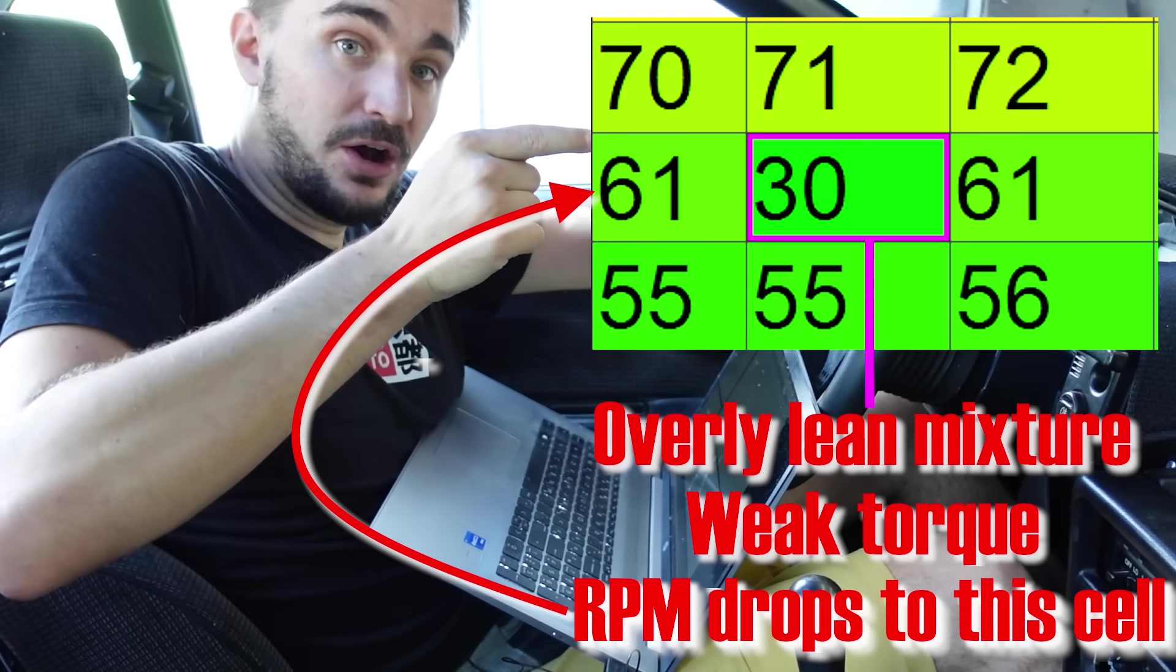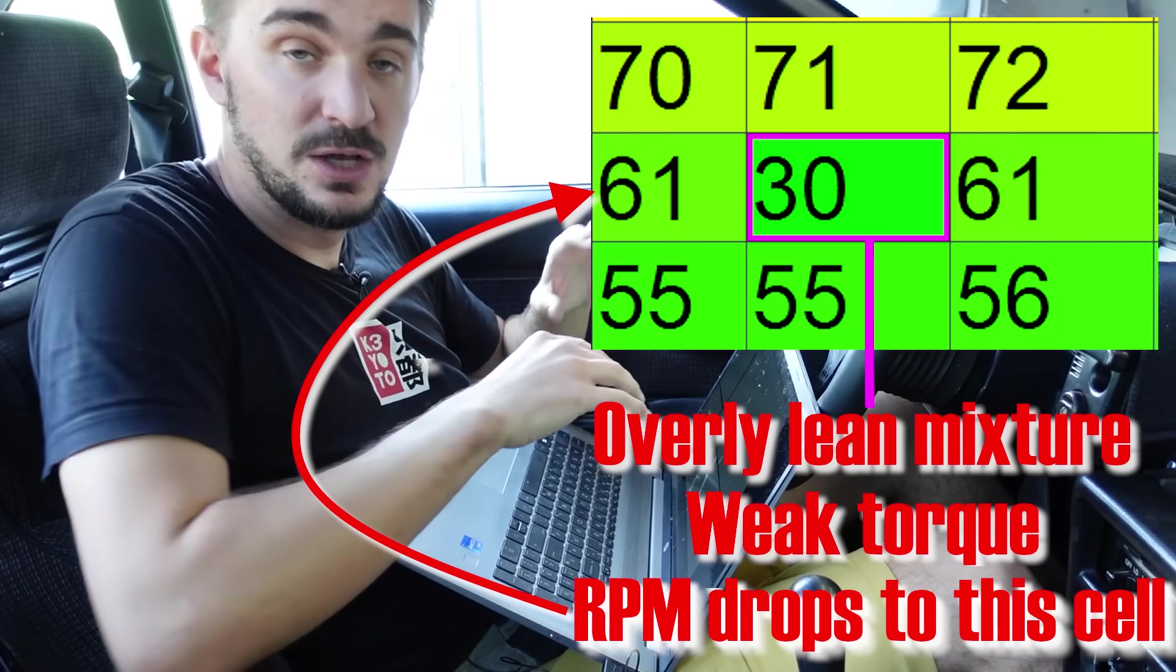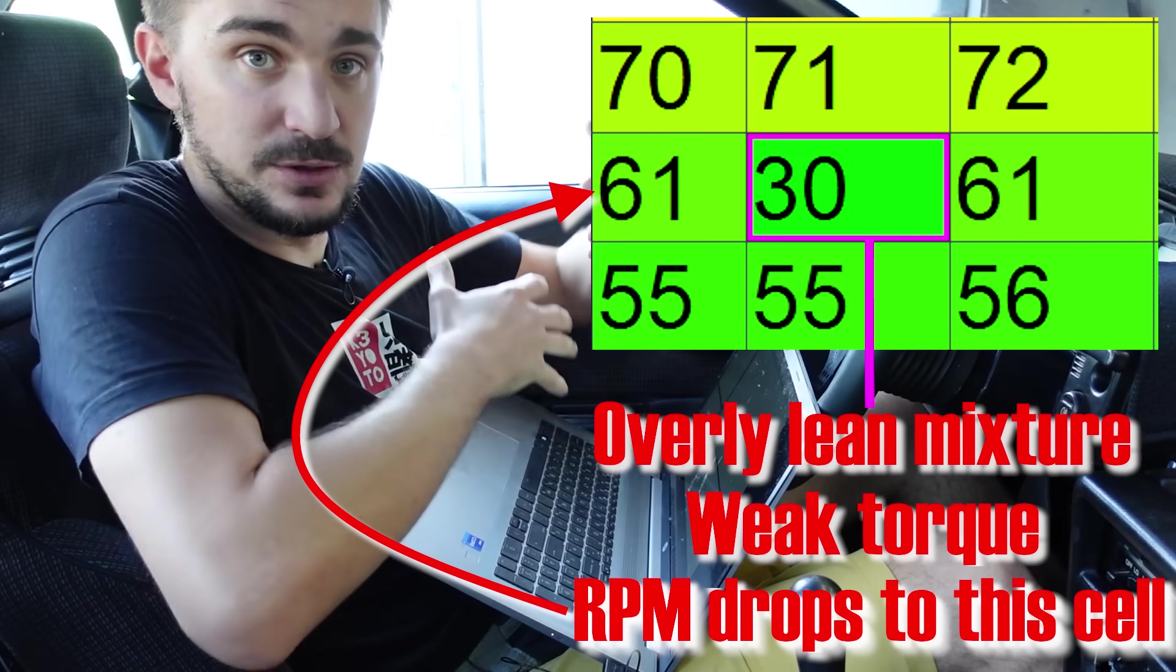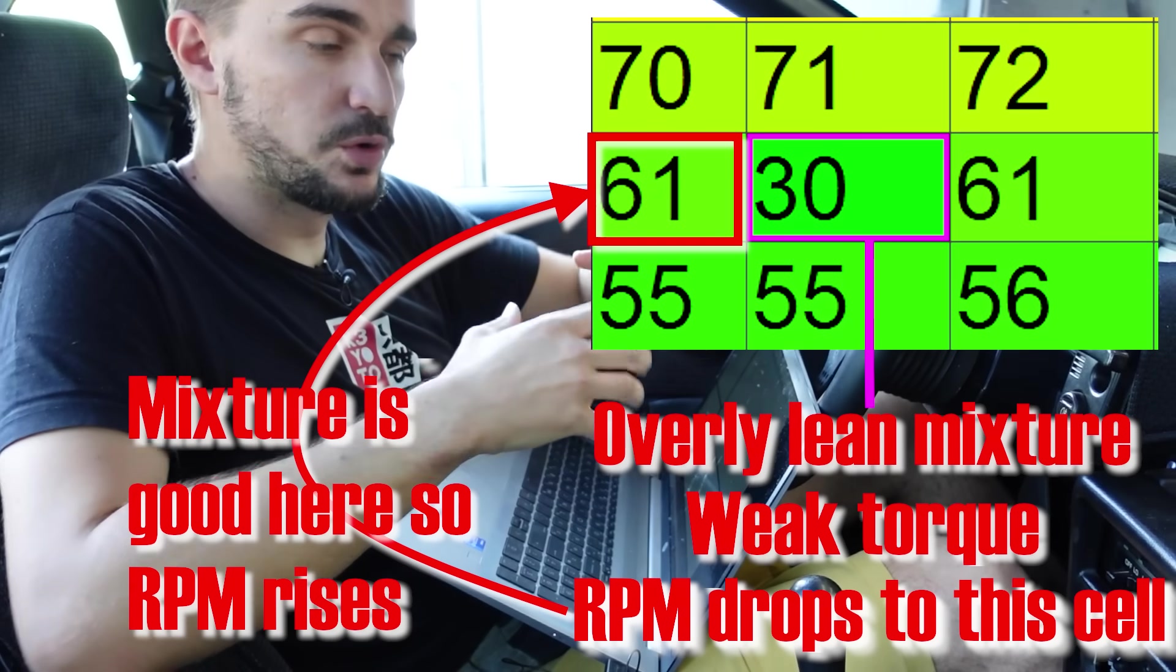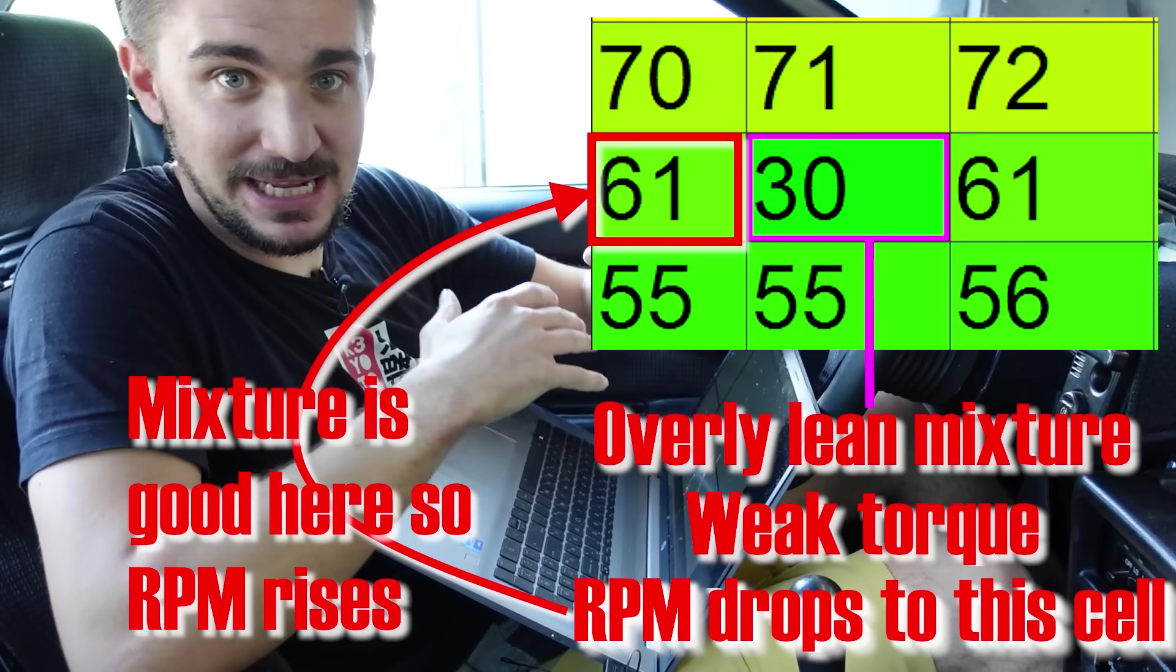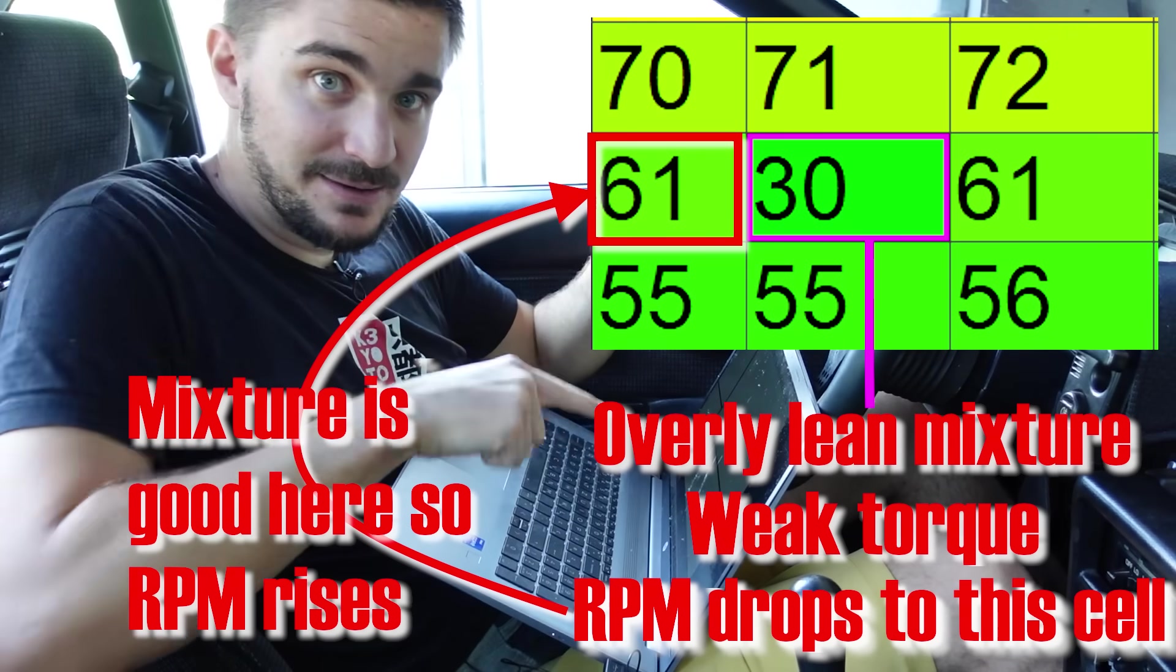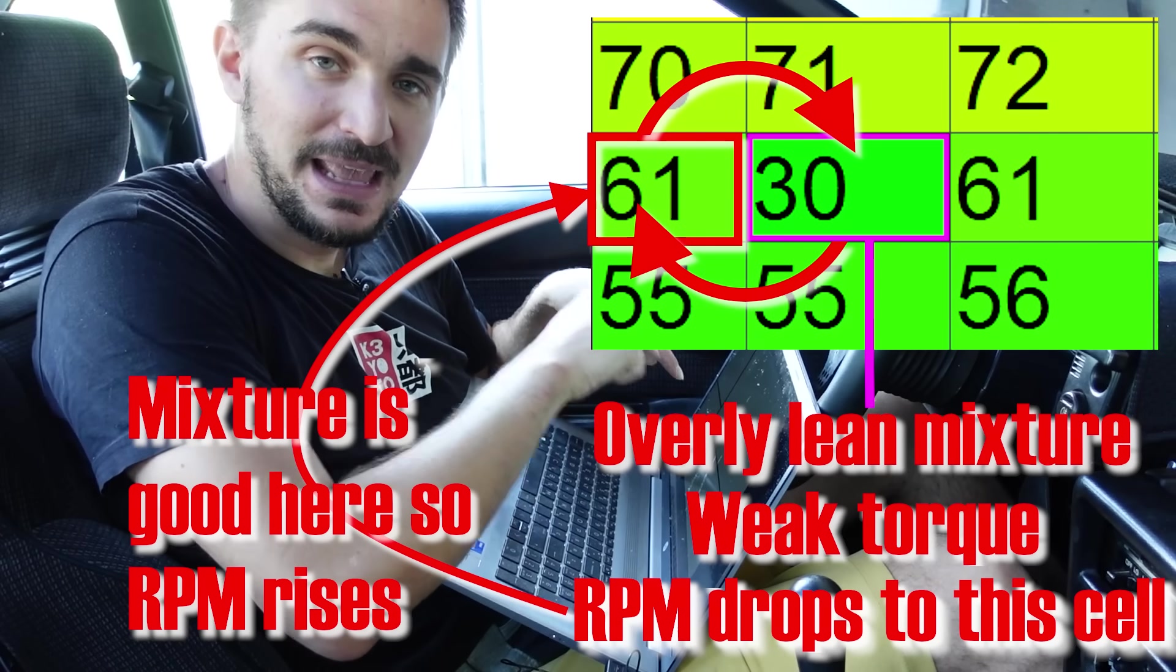So the torque output from the engine becomes weaker and the engine cannot sustain the needed RPM due to this weaker torque output. And so the RPM goes down and this brings us back into one of the other cells which have a correct VE input in them. So this again restores proper torque output, proper combustion, we have more torque and then this sends us back to the incorrect cell. Where again we have too little torque so we fall down and we have a cycle, a never-ending cycle unless we fix the value in the table.